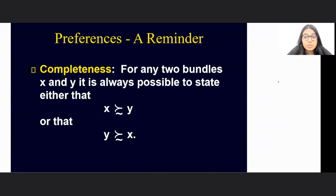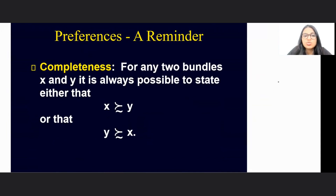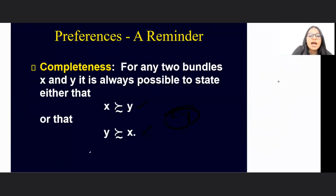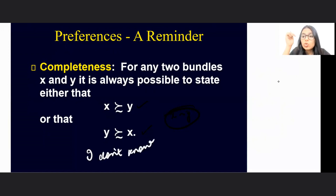We also talked about some of the assumptions under preferences. The first assumption was related to Completeness. Under completeness, we said that given two bundles, we should always be able to suggest whether we prefer X over Y, or Y over X, or we are indifferent between X and Y. We should never say 'I don't know' — that should not be an option. Given two bundles X and Y, you should always be able to tell which bundle you give preference to.